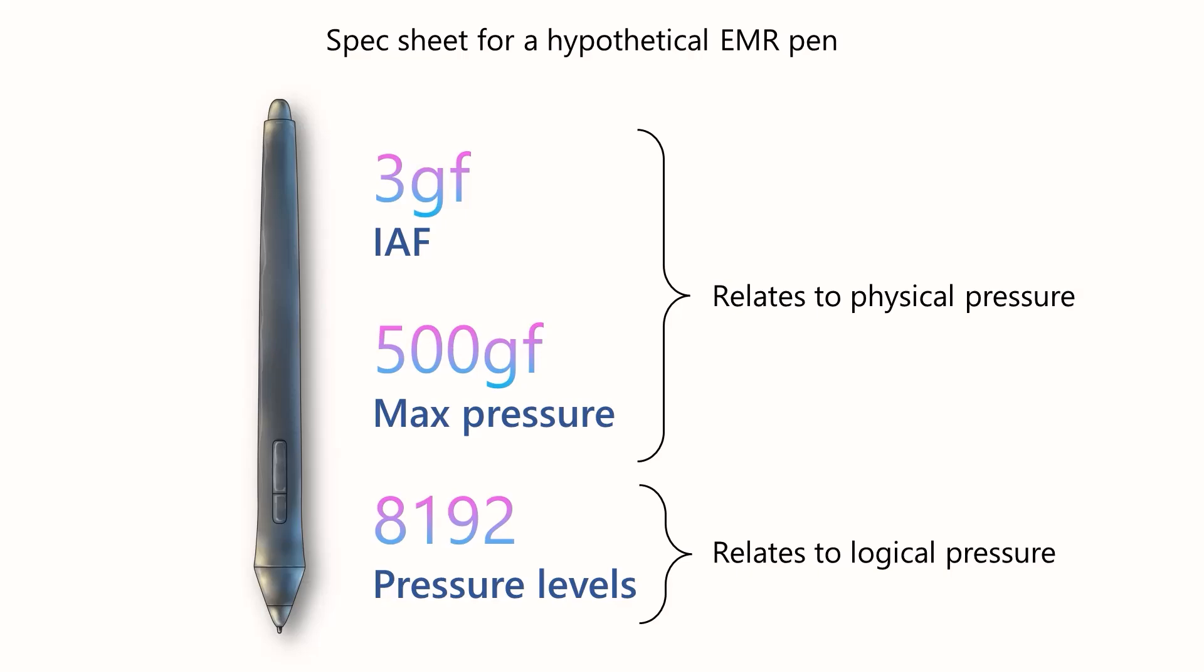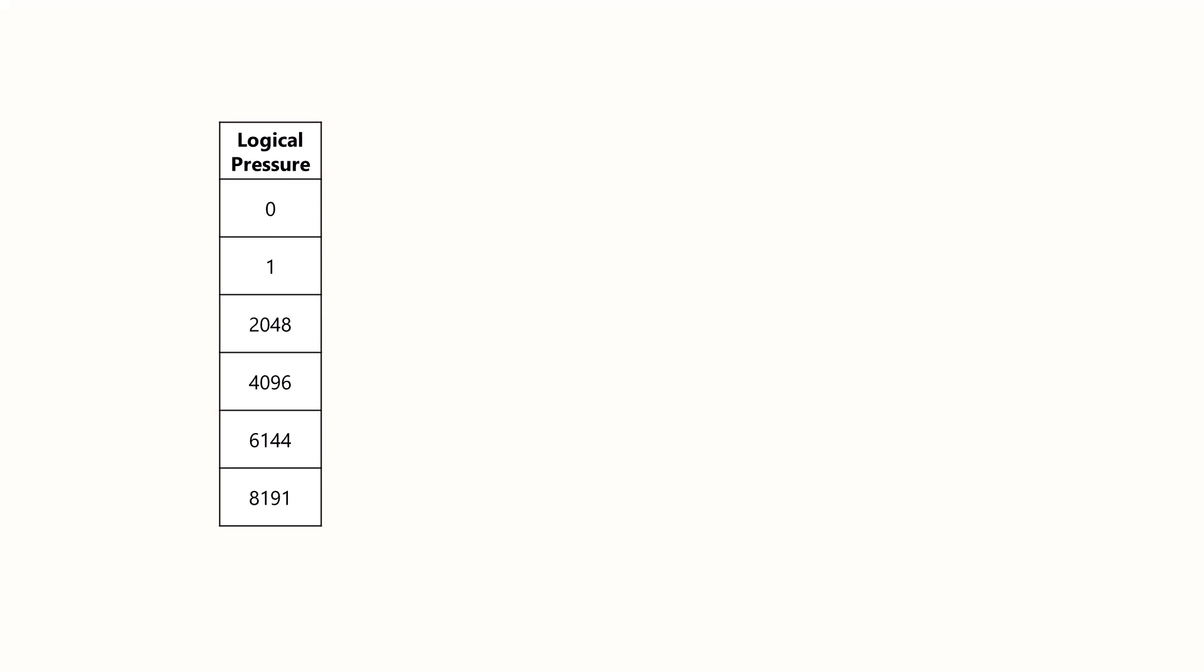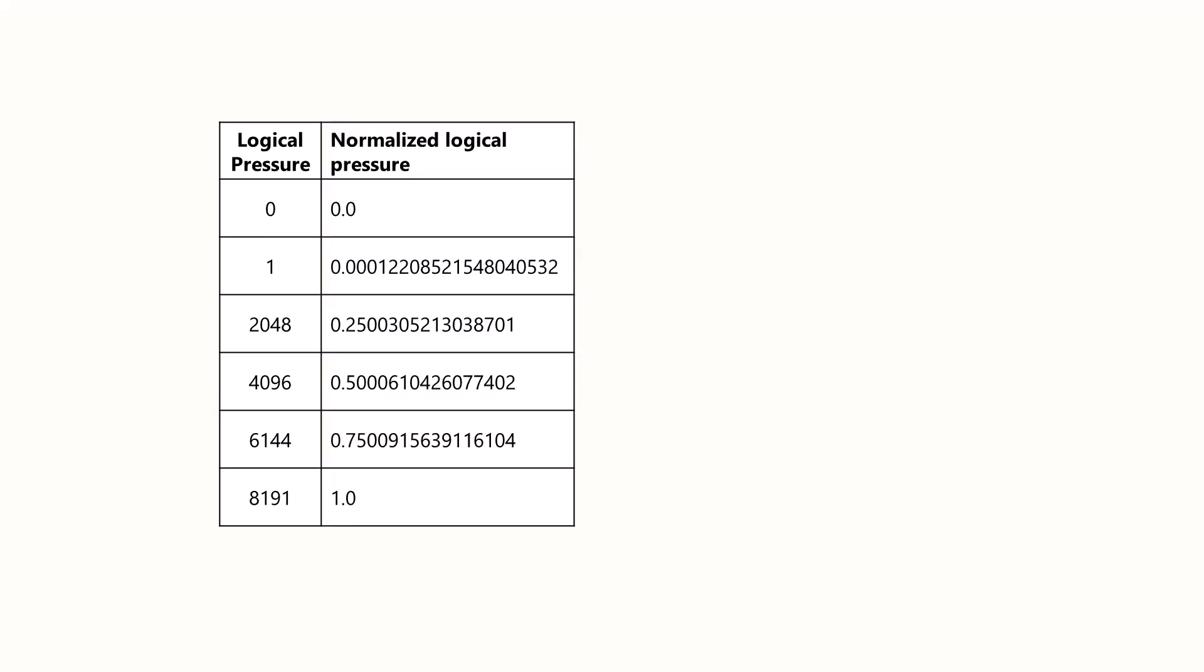In this video, we'll explore what that relationship is. These 8,192 pressure levels are often represented as a set of integers that go from 0 to 8,191. But there are other equally valid and equivalent ways of talking about these pressure levels. We could say that these logical pressure values are also floating point numbers that go from 0 to 1.